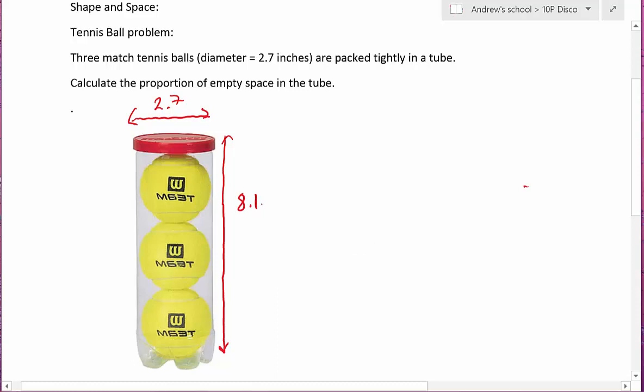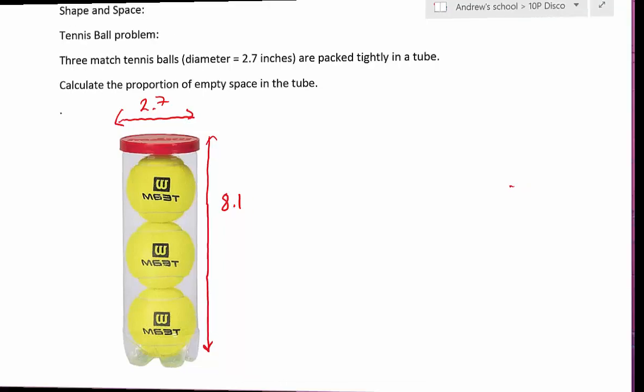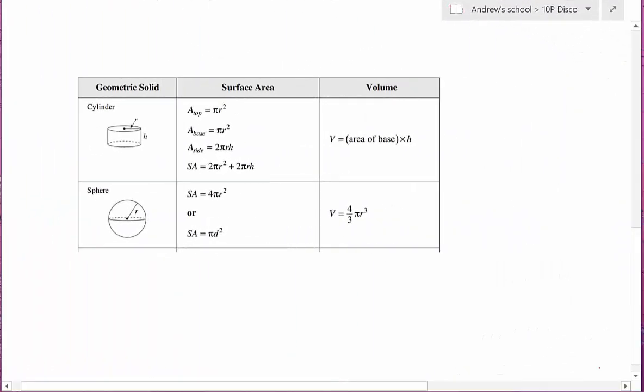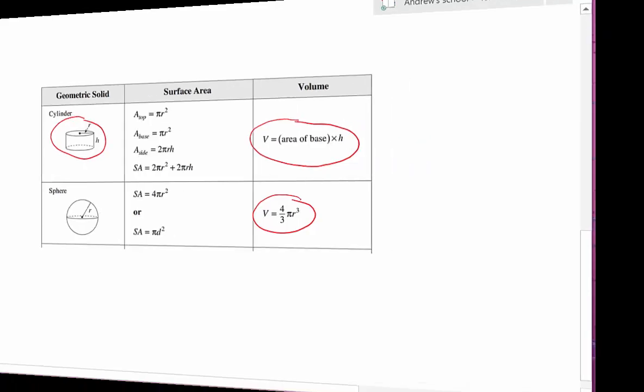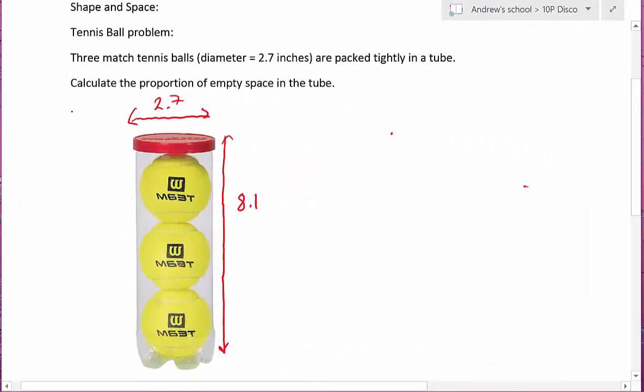We can certainly work out the volume of the cylinder. We might need to go to the formula sheet to do that. And we can see that the volume of a cylinder is simply the base area times the height, in other words pi r squared times the height. While we're here we can see that the volume of a sphere is 4 thirds pi r cubed. OK, so back to the question.